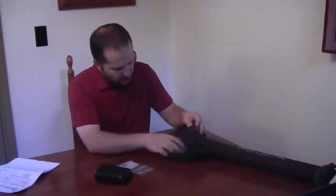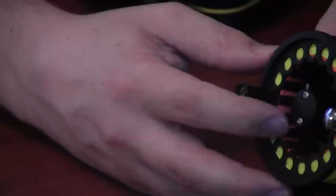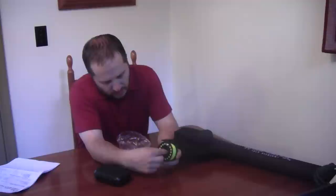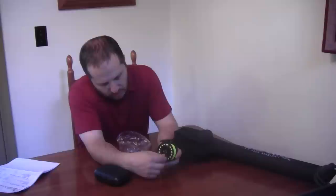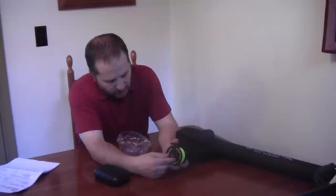Inside the main pocket we have the reel itself. Now this comes set up for left hand retrieve but it is reversible. You can switch it out to be right hand retrieve if you'd like. This reel is a large arbor reel, so rather than just a narrow spindle inside it's wider, which means that when you reel it in you get more line in quicker because of the large spool size. It has a fully adjustable drag on this side. Some of the cheaper fly rods don't have adjustable drag.